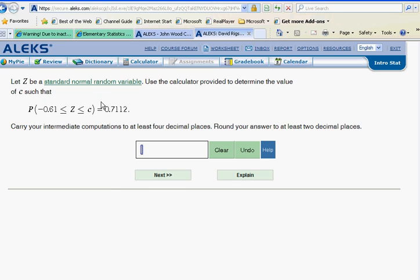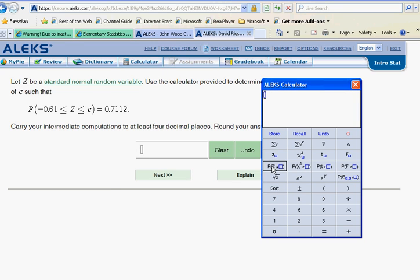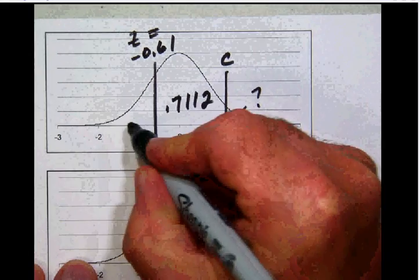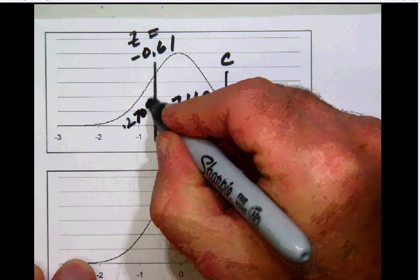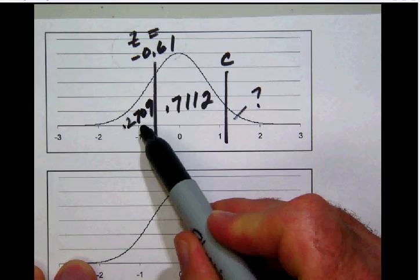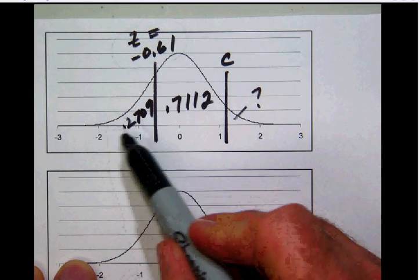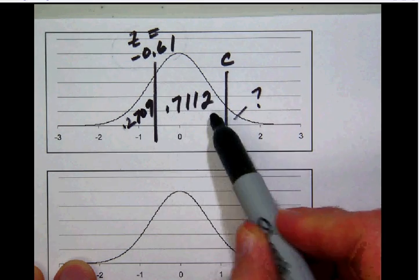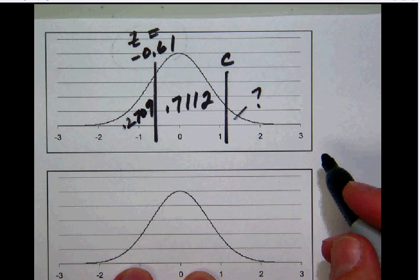Let's take the p of z right here of negative 0.61. And what that's going to tell us is that we have this decimal. Let's take that to four decimal places, 0.2709. Now let's remember where that area is. That 0.2709 is going to be the area under the curve to the left of the negative 0.61. So it's going to tell us this area over here. Now notice that this area here and this area here are side by side.